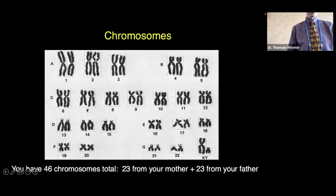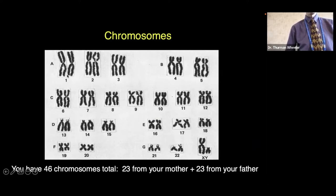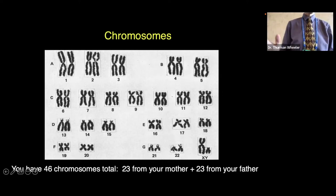You have 46 chromosomes total — 23 from your mother and 23 from your father. Here's a picture of chromosomes aligned in pairs: chromosome one, both pairs; chromosome two, both pairs — one from the mother, one from the father — and so on, all the way down to chromosome 22, which are numbered one to 22.